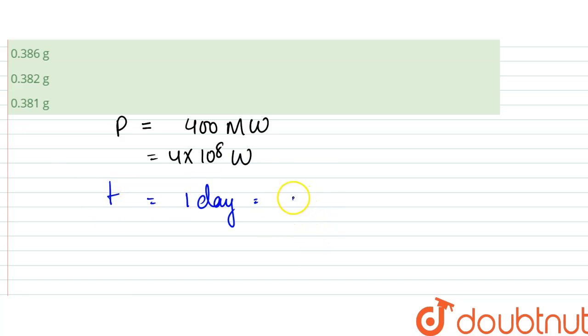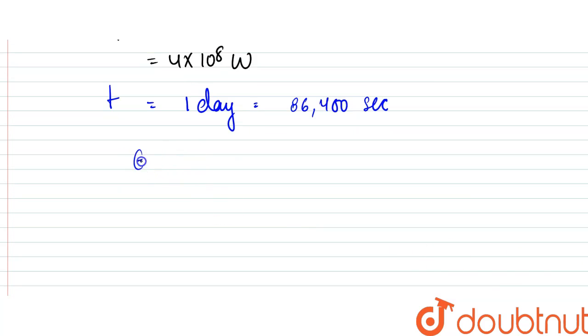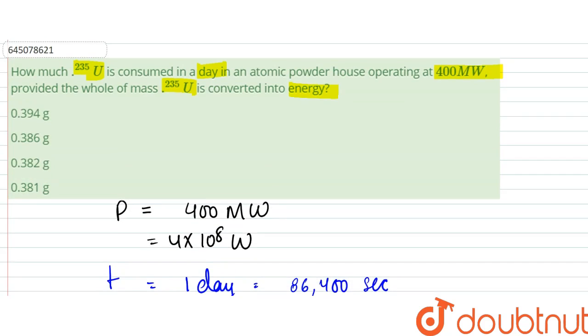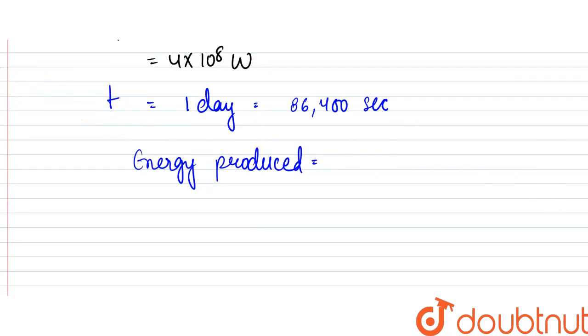So energy produced here, energy produced would be equal to power into time. So that is equal to 4 into 10 to power 8 into 86,400. So this gives us value, that is 3.456 into 10 to power 12 joules. So this is the amount of energy here.